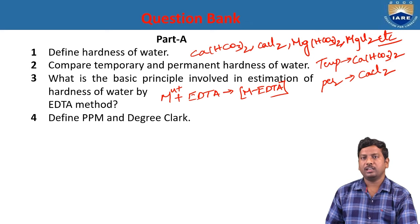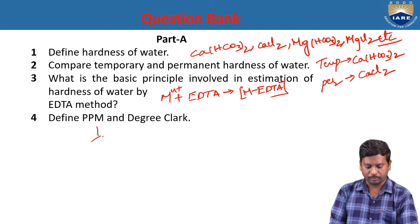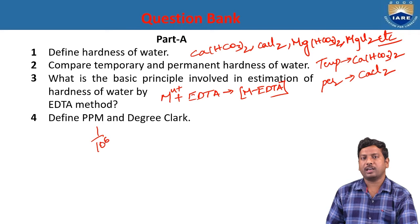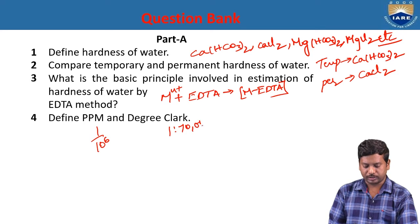Define ppm and degree Clark. PPM is defined as the amount of hardness expressed in terms of calcium carbonate equivalence in the parts of 1 to 70,000 parts.